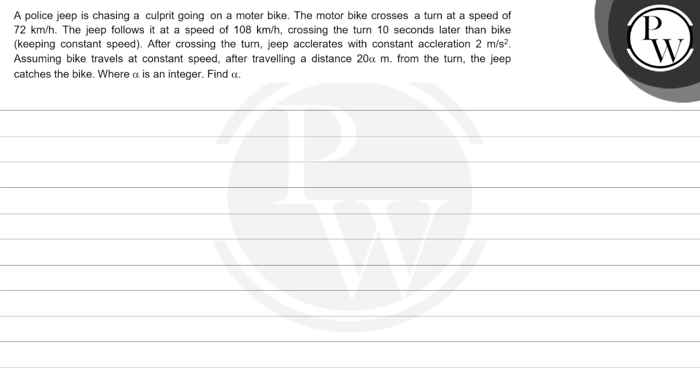Let's read this question. The question says a police jeep is chasing a culprit going on a motorbike. The motorbike crosses a turn at a speed of 72 km per hour. The jeep follows it at a speed of 108 km per hour, crossing the turn 10 seconds later than the bike.